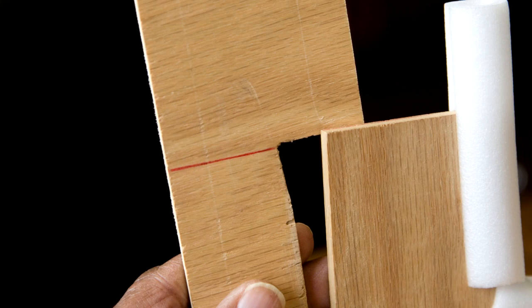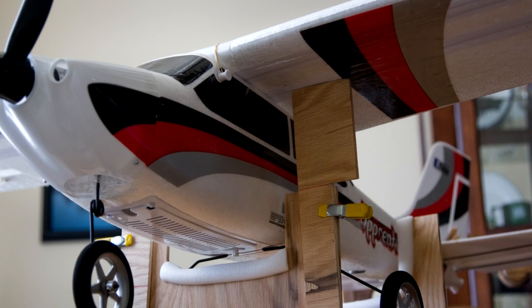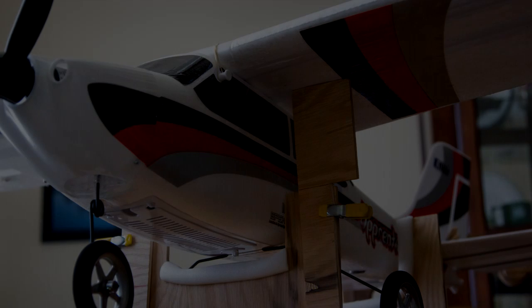Once you've done that, you want to apply this to the front of the cradle and then you can take the clips that are provided and attach it so that it won't slip off. Now you're set to put your airplane on and find its center of gravity.